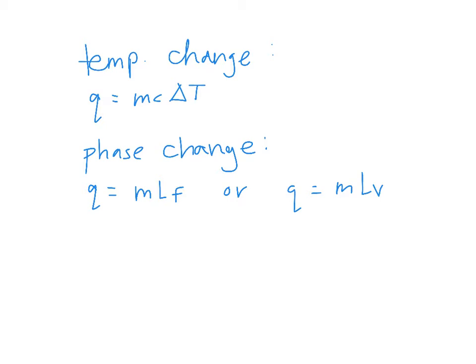And anytime there is a phase change to calculate the heat released or absorbed, we use Q equals M times L sub F, where L sub F is the heat of fusion. This is for melting and freezing. Or Q equals M times L sub V. L sub V is the heat of vaporization. This is for boiling and condensation.